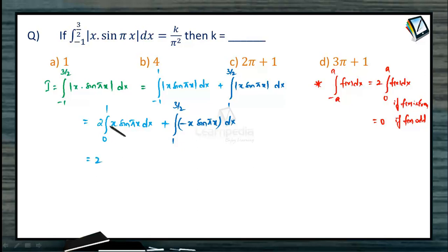Now we can simply apply the product rule for integration here. So this is 2 times minus x into cos pi x by pi plus sin pi x by pi square between the limits 0 to 1 plus the second integral becomes plus x times cos pi x by pi. There are two minus signs. So plus minus of sin pi x by pi the second integral evaluated between 1 to 3 by 2.